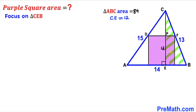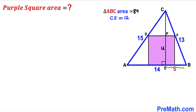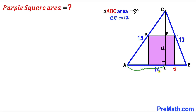Focusing on right triangle CEB, we recall the Pythagorean triplet 5, 12, 13. Since we know the hypotenuse is 13 and one leg is 12, the other leg BE must be 5 units. Since the full length AB is 14, the remaining length AE equals 14 minus 5 = 9 units.